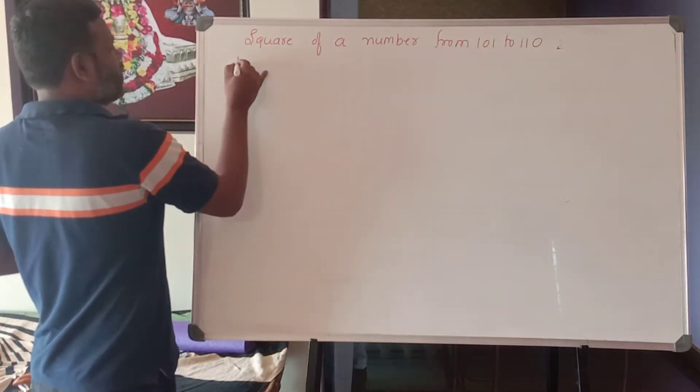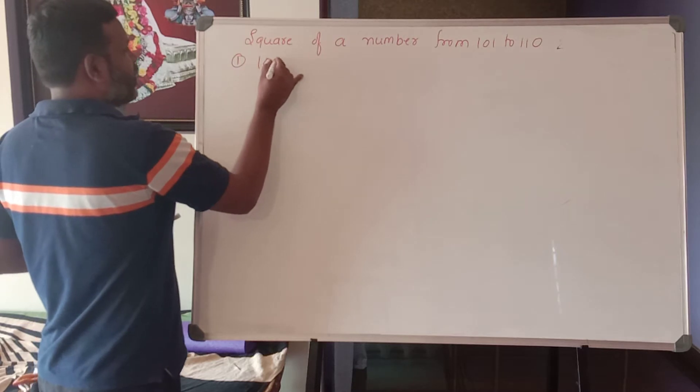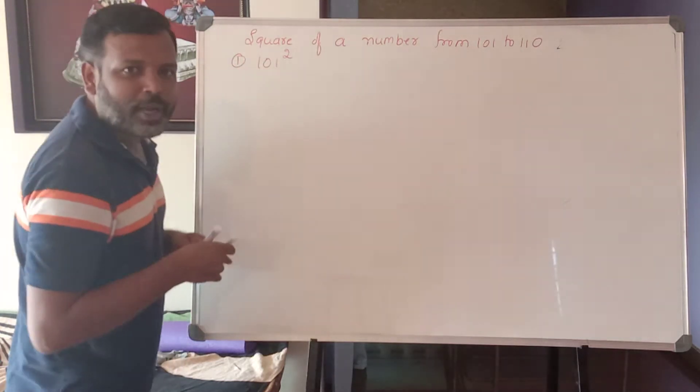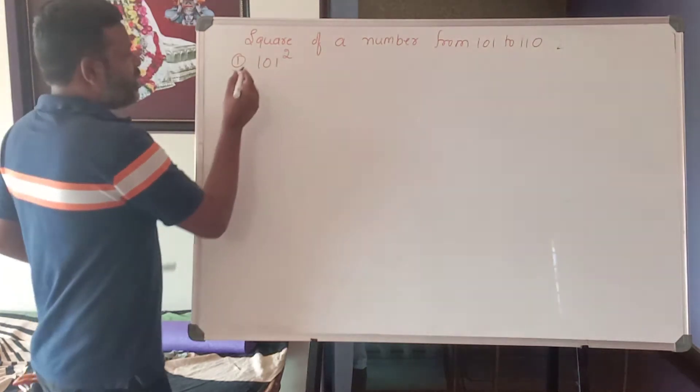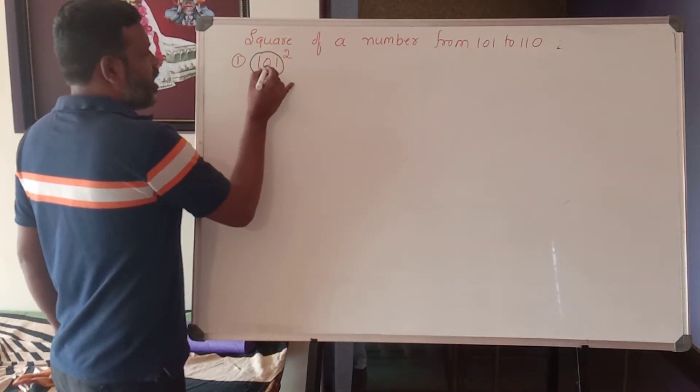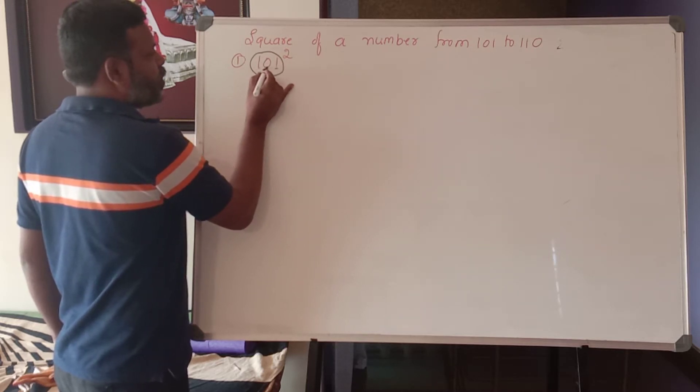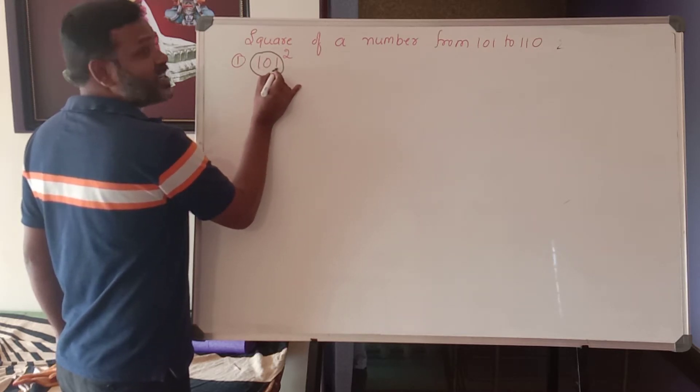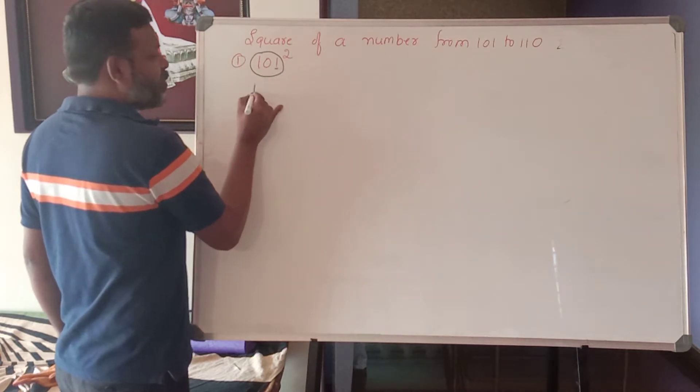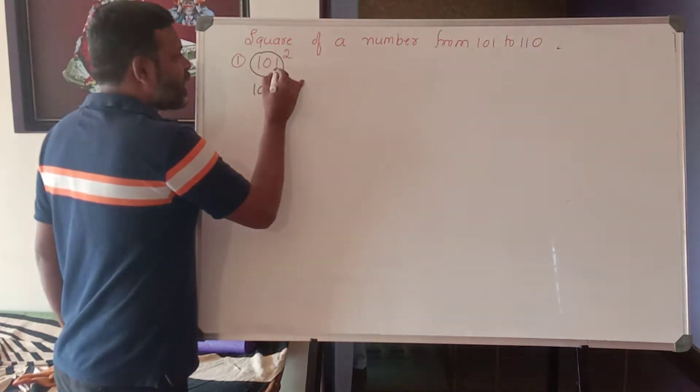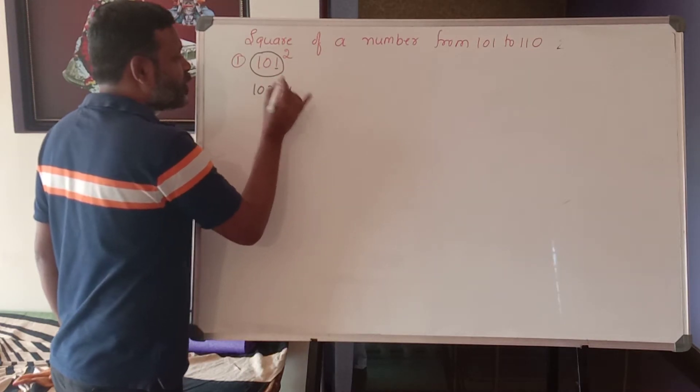First number is 101. Now have a look. The given number is 101. And last digit for the number, number is 101, plus last digit is what? 1. That becomes what? 102. And last number square, 1 square is 01. Put 01, not 1.